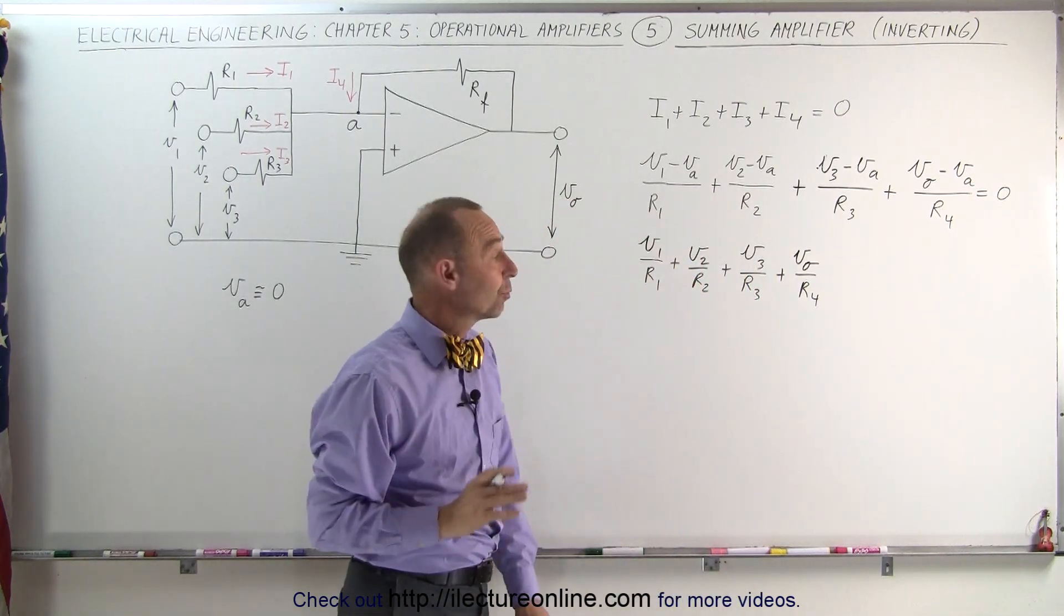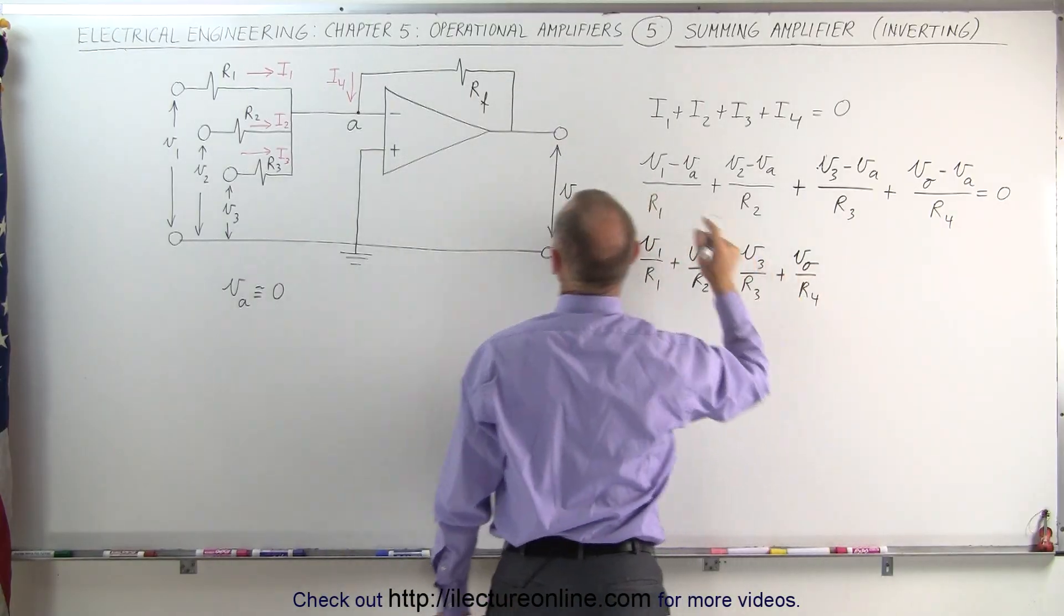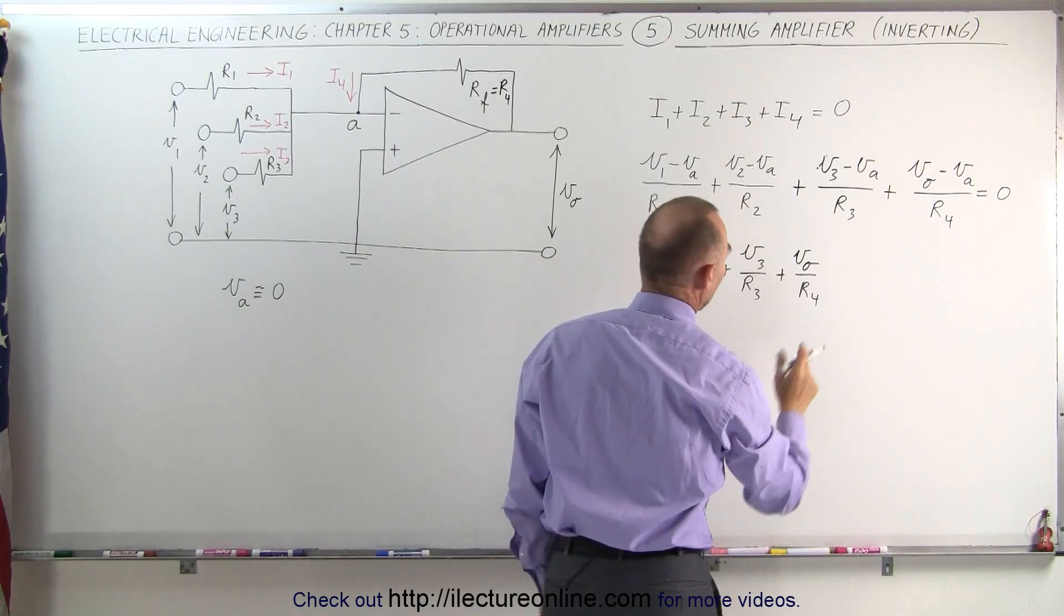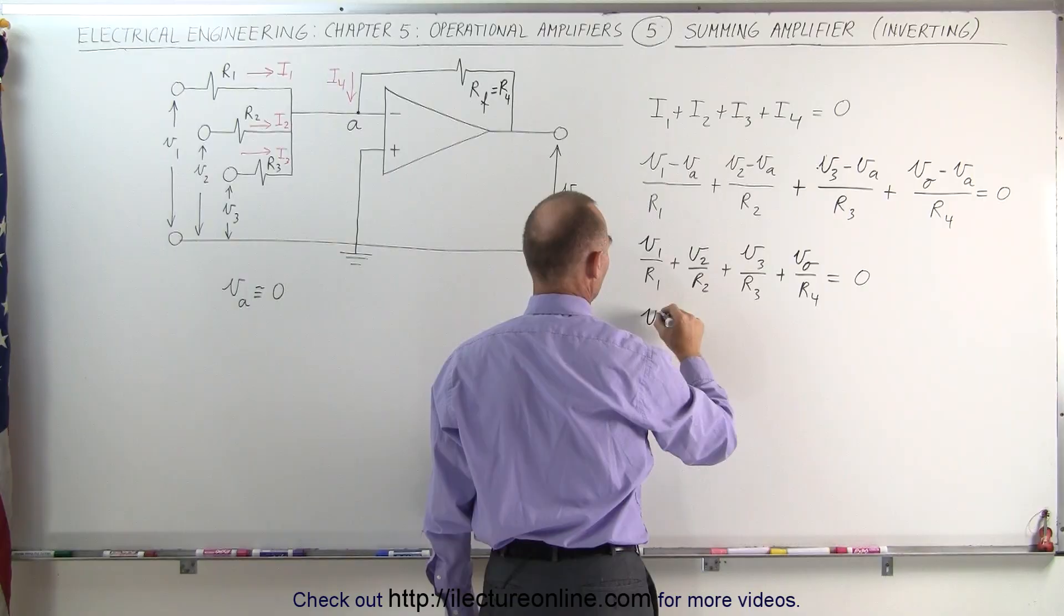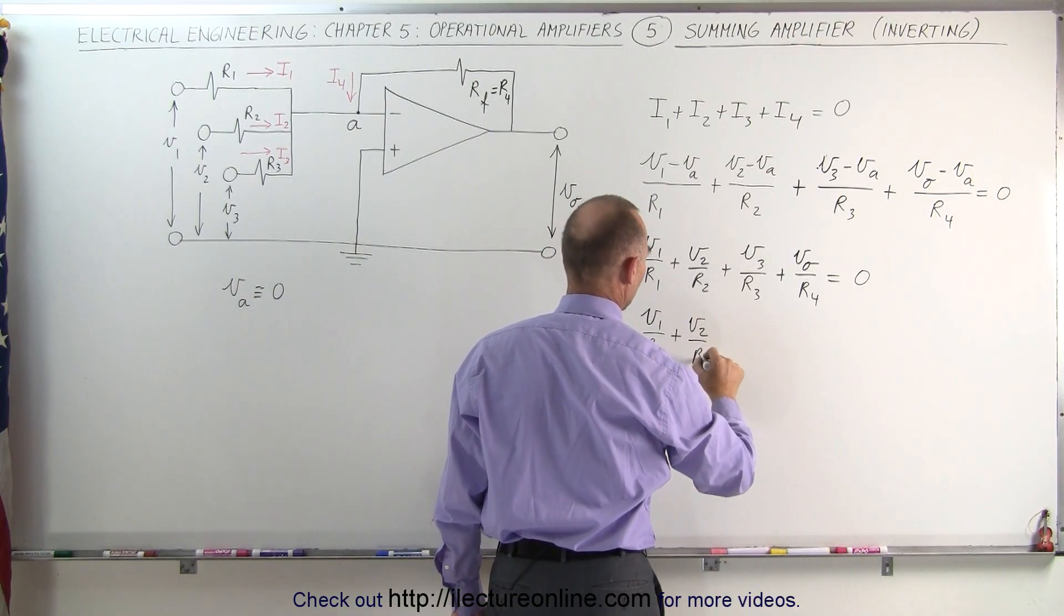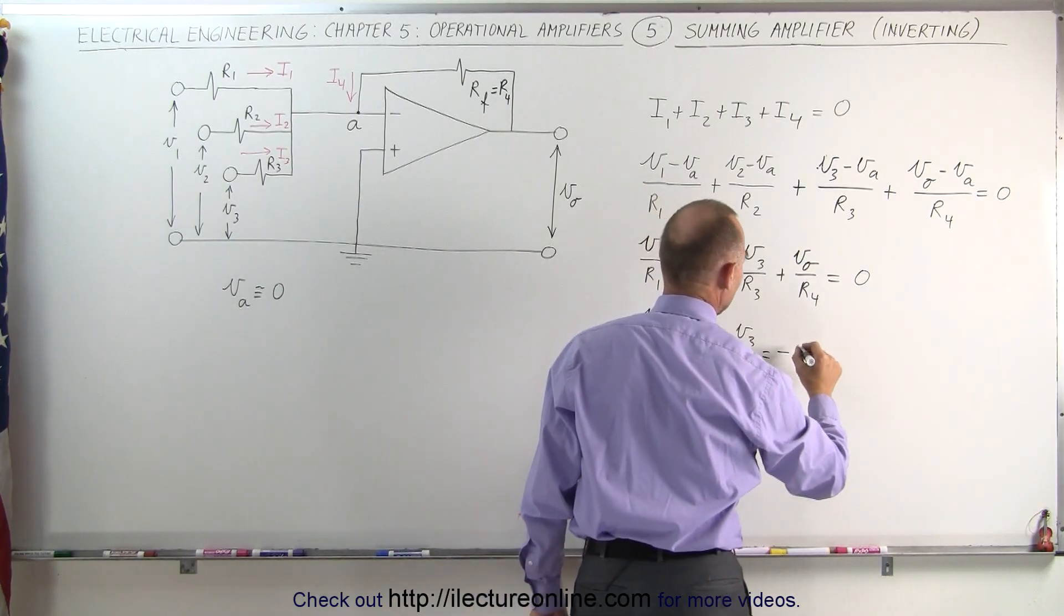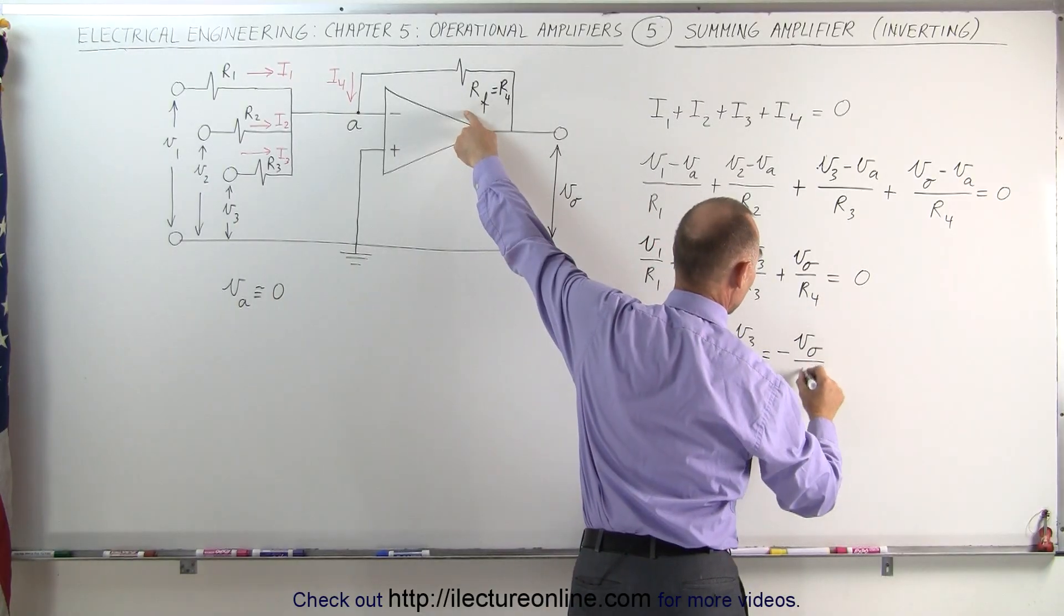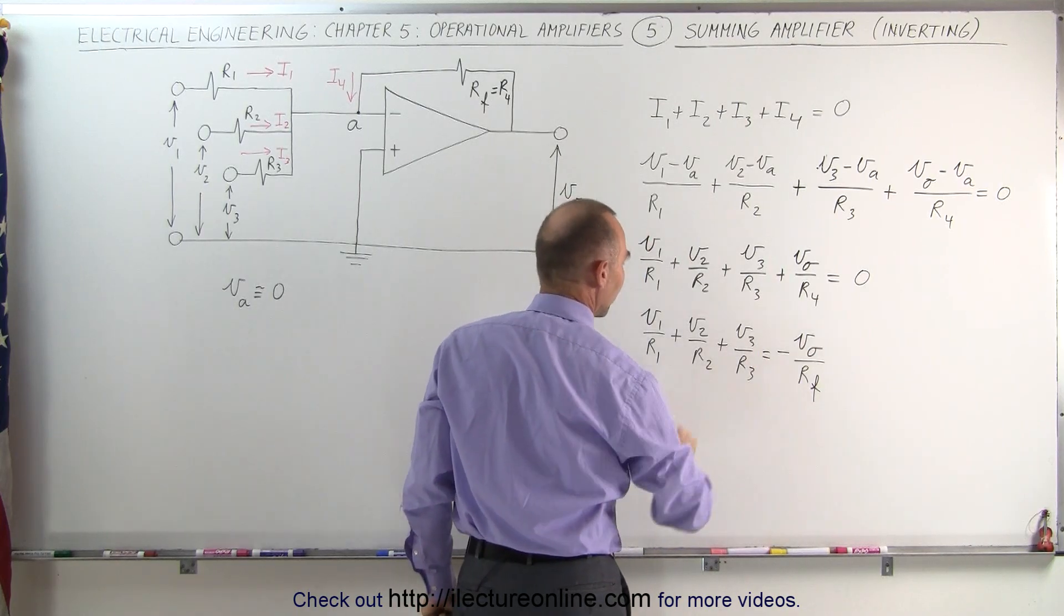What we're going to do now is replace R4 with Rf because that's going to be the feedback resistor. And we're going to move that to the other side of the equal sign and make that negative. That's V1 over R1 plus V2 over R2 plus V3 over R3 is equal to the negative V0 over the feedback resistor R sub F. And finally, we can then go ahead and solve for V sub O.